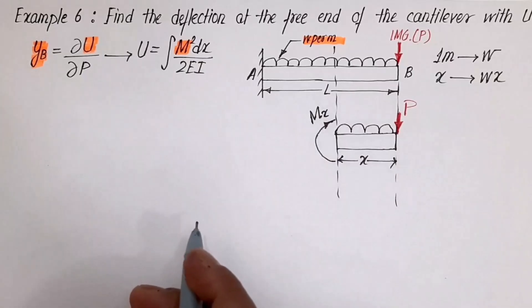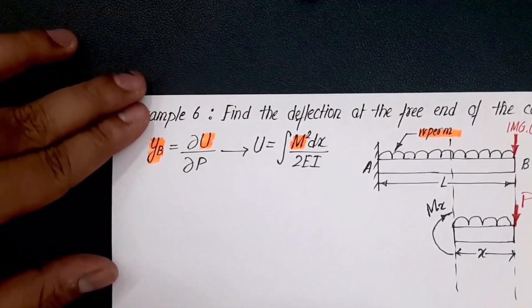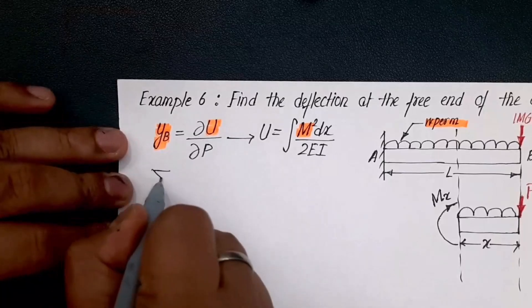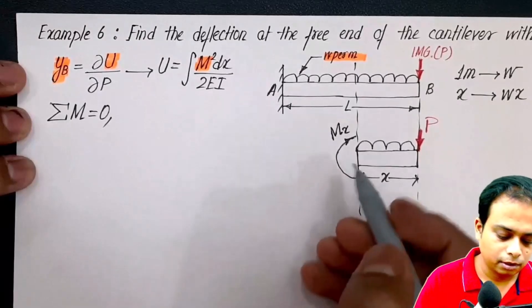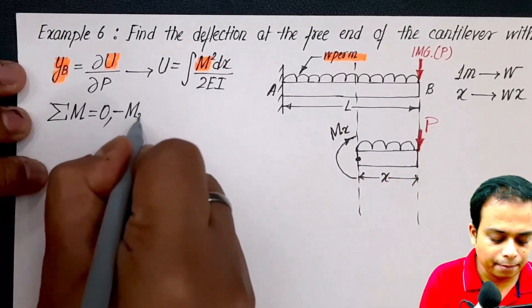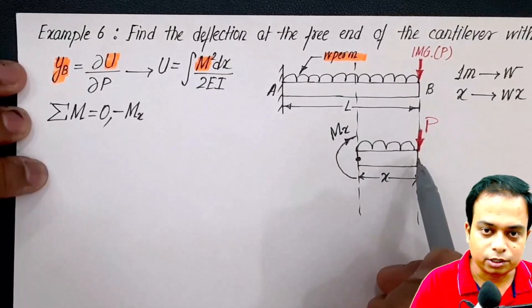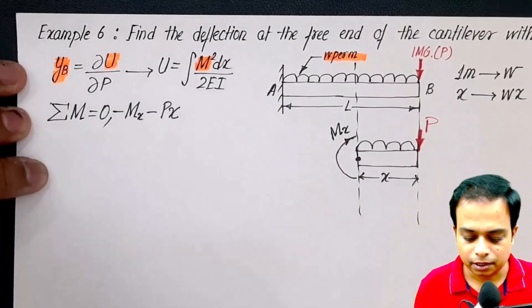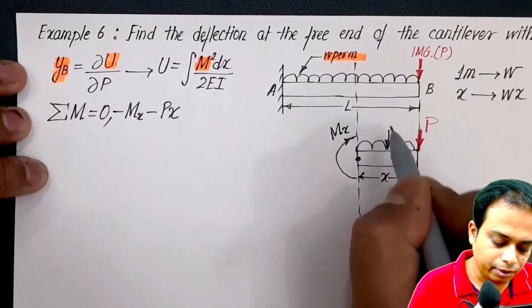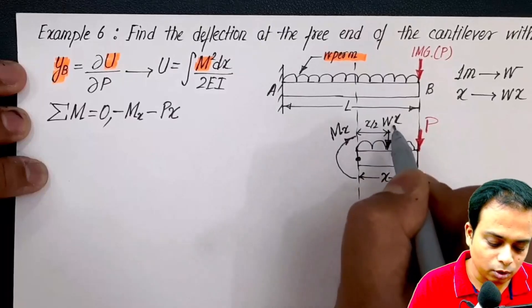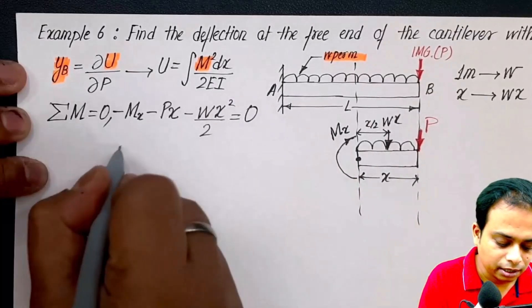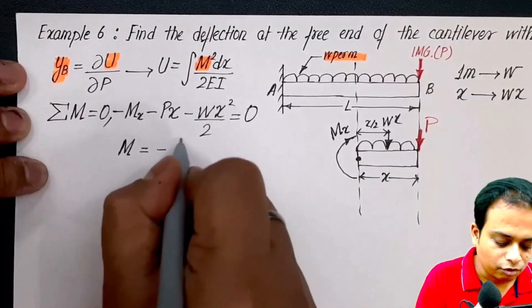The first thing that we'll do is sum of moments equal to zero. Take a look at this very point. We are going to find the moments at this very point. We have assumed the moment to be clockwise, therefore minus Mx. There is this P into x, it is clockwise moment, therefore minus Px. What about the moment corresponding to this UDL? This UDL can be replaced with a point load of magnitude w into x which lies at a distance of x by 2. So minus wx square by 2 is equal to 0. The moment is equal to negative of wx square by 2 plus Px.